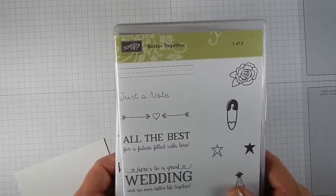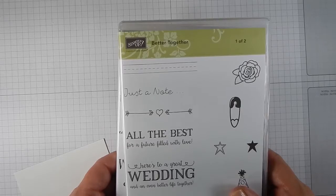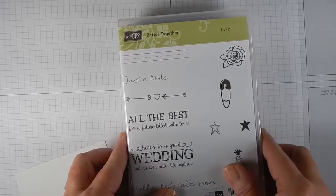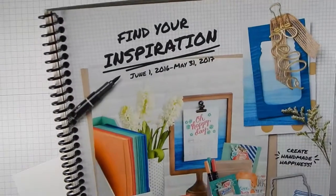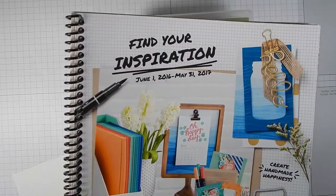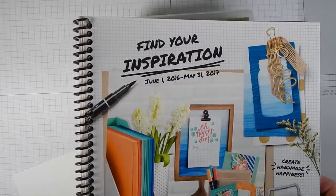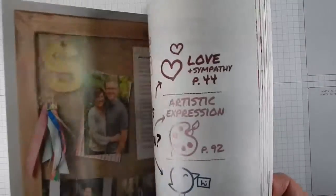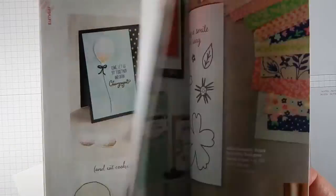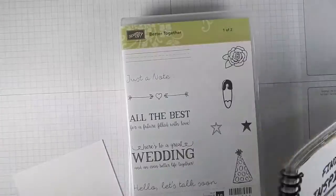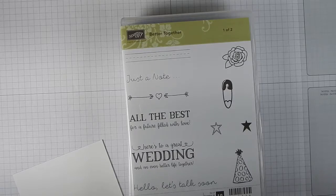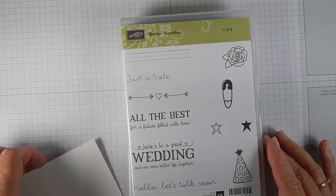For this card, we're using a stamp set called Better Together. This is one of the new ones in the catalog. It came out June 1st. This is good from June 1st, 2016 to May 31st, 2017. Everything that we'll be using, you can find in here. If you don't have your catalog, you can contact me at Lori at Scraps by Sissy.com and I will get one out to you.